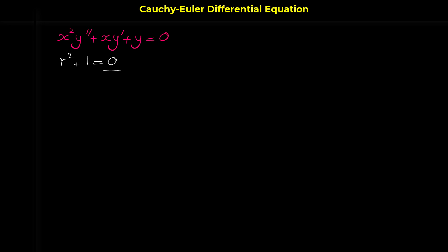For finding r from this characteristic equation, you can use the quadratic formula, but it's easier to move one to the other side. r squared equals negative one, and if you take the square root, r is plus or minus the square root of negative one. We usually use the symbol i for the square root of negative one, so r equals plus or minus i, and we can suppose we have one here.